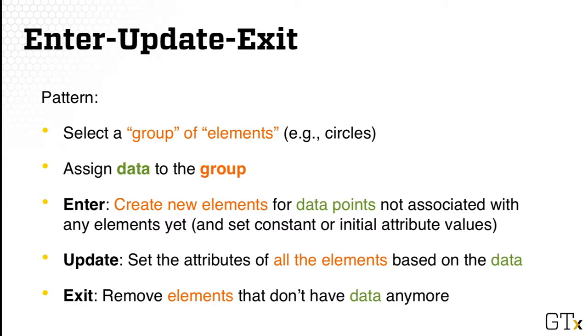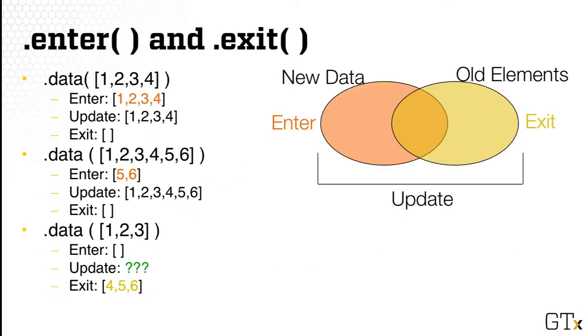Elements here in orange are actual visual elements, and data in green are the actual data points. At first glance, this may seem a little abstract. What do you mean by creating elements of data that are not associated? We'll look at an example very quickly now to figure out what all those means.